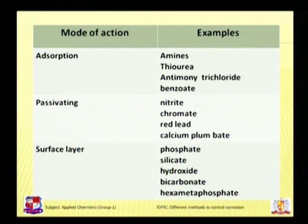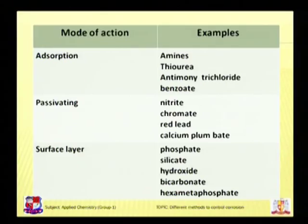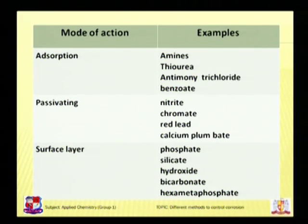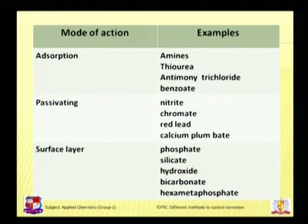The different modes of action of corrosion inhibitors are as follows. The first mode is adsorption — for example, amines, thiourea, antimony trichloride, and benzoate act by adsorption. The second mode is passivation, which means decreasing the reactivity of the metal surface by incorporating inhibitors such as nitrate, chromate, red lead, and calcium plumbate. The third mode is by forming a surface layer — compounds such as phosphate, silicate, hydroxide, bicarbonate, and hexametaphosphate all form a surface layer on the metal surface.